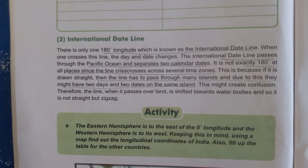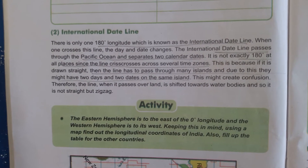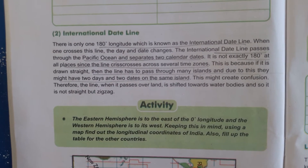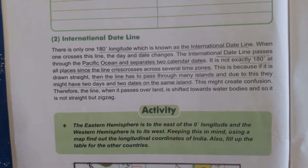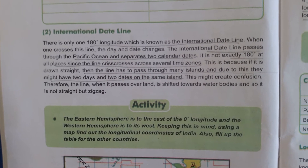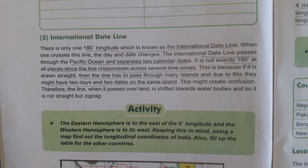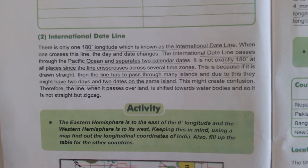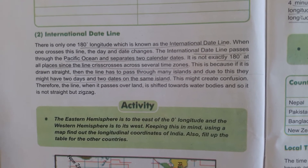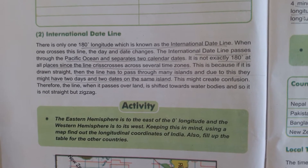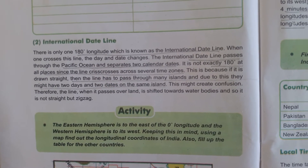There is only one 180 degree longitude and that is the international date line. When one crosses this line, the day and the date both change.